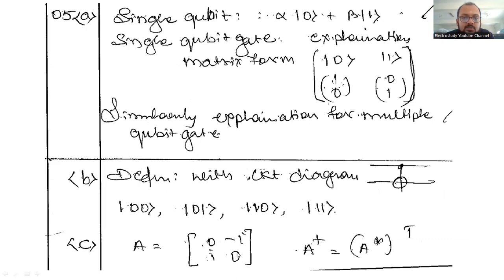You can go through these answers. Look at this. These points you can proceed for your exam preparation. This you can write in matrix form. A neat explanation is required for multiple qubit gate. These are the requirements.